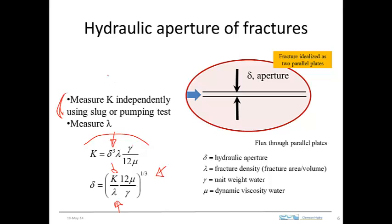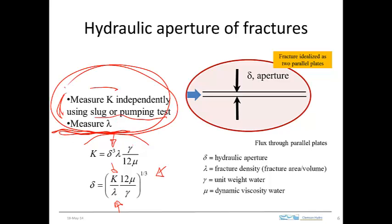If we can measure the hydraulic conductivity and the fracture density, then we can estimate the average hydraulic aperture of the fractures. Hydraulic conductivity can be measured independently using a slug or pumping test, and fracture density can be estimated using a camera survey. Taking these data, we can use this calculation to estimate the effective hydraulic aperture. Implicit in this is the assumption that all fractures are identical — at a certain density, all with the same hydraulic aperture.